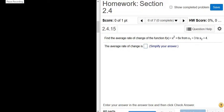Find the average rate of change of the function f(x) = x² + 6x. We're told that x₁ = 3 and x₂ = 4.